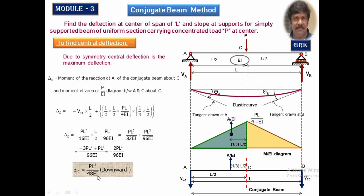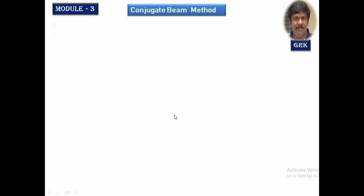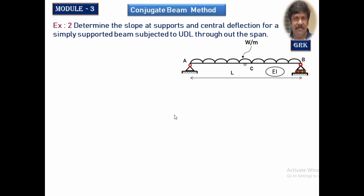This is a standard case where a simply supported beam has been loaded with a point load — maximum deflection is WL³ by 48EI. Similarly, we will calculate one more standard case where a uniformly distributed load is spread over the full span of L meters, with a UDL of W per meter run. We have to calculate the slopes at the supports as well as the deflection at the center.